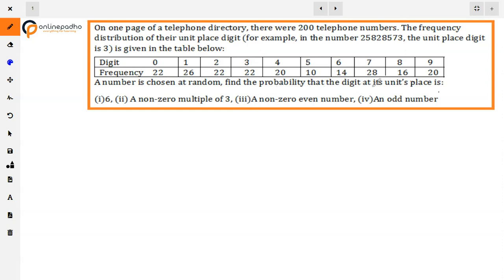A number is chosen at random. Find the probability that the digit at its unit place is 6. To solve this, the total number of cases will be 200, as we are told there are 200 numbers.